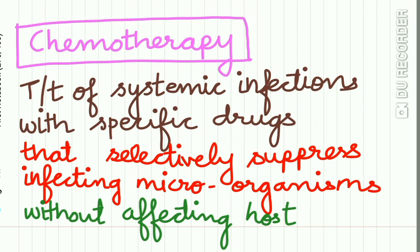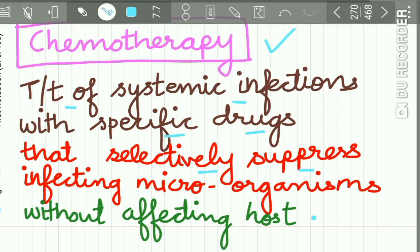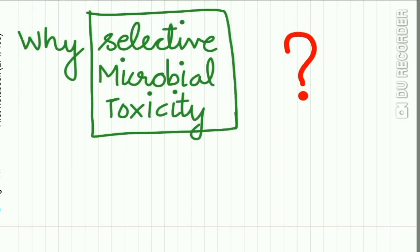This type of therapy is also called chemotherapy. It is called chemotherapy because it is a treatment of systemic infections with specific drugs, and these drugs selectively suppress infecting microorganisms without affecting the host.